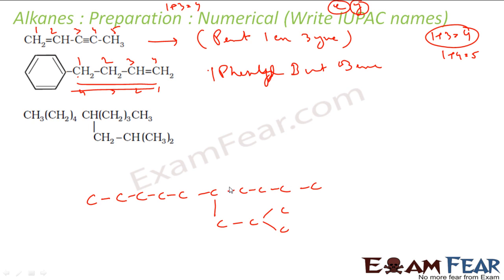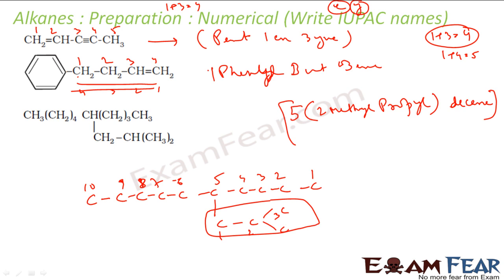If you number from this side, 1, 2, 3, 4, 5th position. 1, 2, 3, 4, 5, 6th position. So number from this side is better. If you don't understand this naming convention, please watch my previous chapter video where we explain how to write the names of all things. This is my straight chain. And this is my 5th position. And this is again I have to write separately. So for this, the name of this will be at 5th position a complex group, and that is 2-methyl, this is 2-methylpropyl. And then I have this is 10, this is decane. So it is 5-(2-methylpropyl)decane.